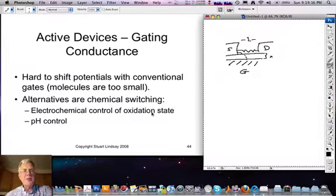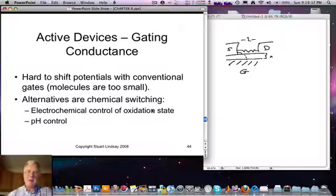An alternative is to use chemical methods to switch the conductance of the molecule. Possible ways of doing this are electrochemical control of the oxidation state of a molecule and pH control.